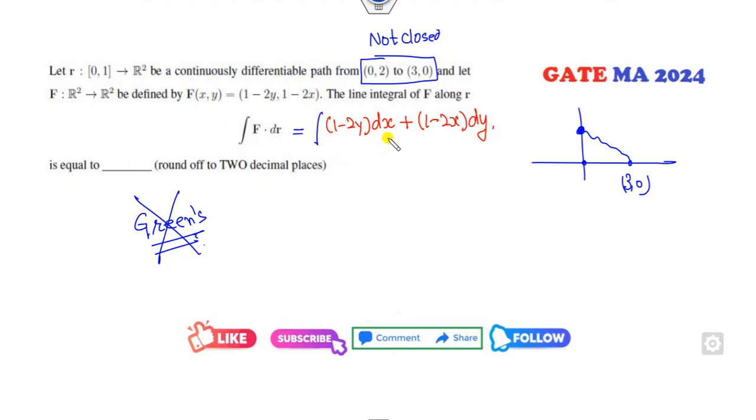What comes to mind when you look at this term m dx plus n dy? You always think about exactness. First, check whether this equation is exact or not. Partial derivative of m with respect to y is minus 2. Partial derivative of n with respect to x is again minus 2. That means it's exact.